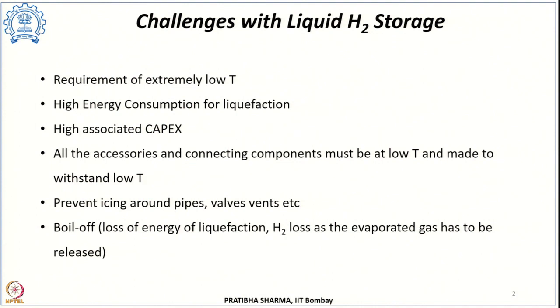The problems with storing liquid hydrogen include the fact that hydrogen has to be stored at 20 Kelvin, which is a very low temperature. This involves very high energy consumption during liquefaction, and the cost associated with liquefaction is also very high. Since hydrogen is stored at 20 Kelvin, all accessories, connecting components including tubings, pipes, walls, and manifolds must also be at that temperature. A chilling process is essential, and all these accessories should be able to handle that low temperature without undergoing major mechanical changes.